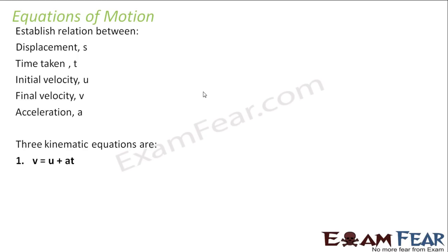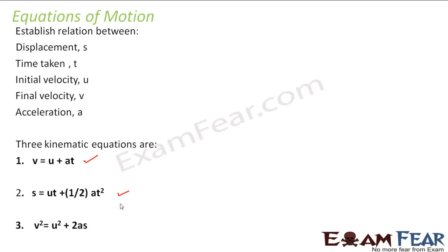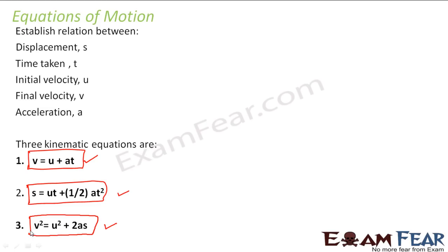These are often known as kinematic equations of motion — the word kinematic relates to something in motion. The three equations are: first, v = u + at; second, s = ut + ½at²; and third, v² = u² + 2as. These are the general forms, so if there is negative acceleration or retardation, 'a' becomes negative and the equation becomes v = u − at.